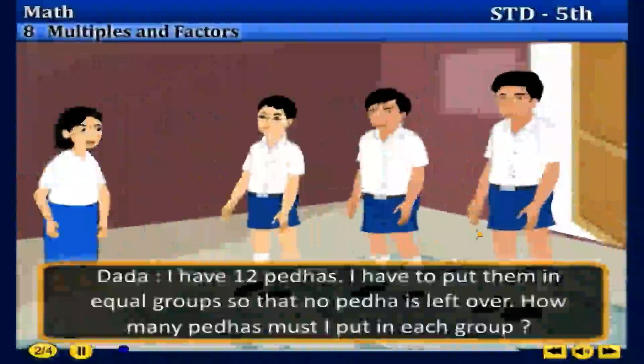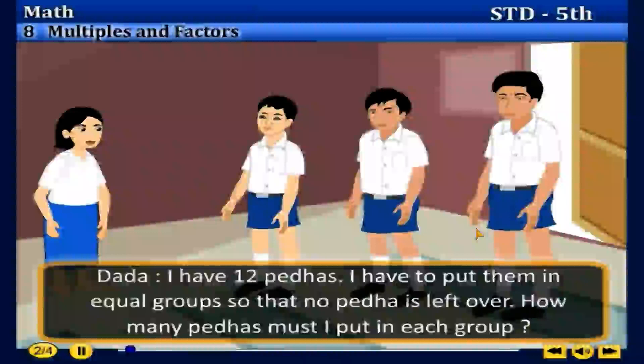Dada, I have 12 peras. I have to put them in equal groups so that no pera is left over. How many peras must I put in each group?